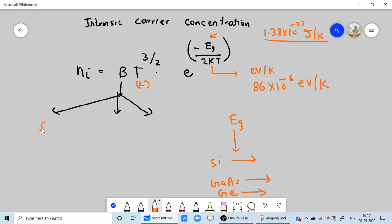For silicon, gallium arsenide, and germanium we have three values. The first value for silicon is 5.23 into 10 to the 15, and the unit is centimeter raised to minus 3 and Kelvin raised to minus 3 by 2.